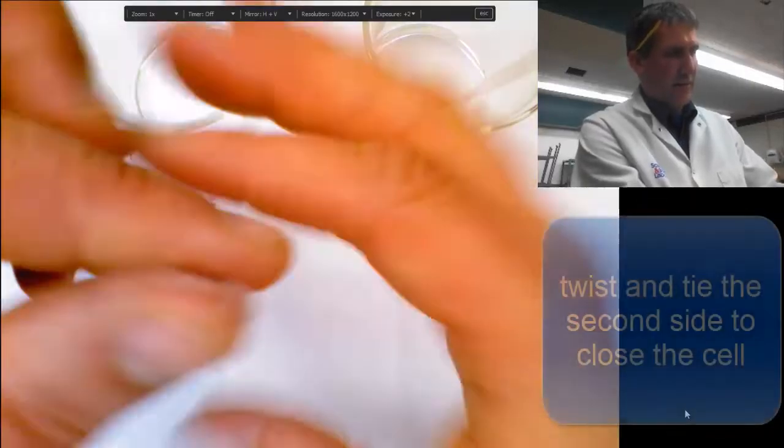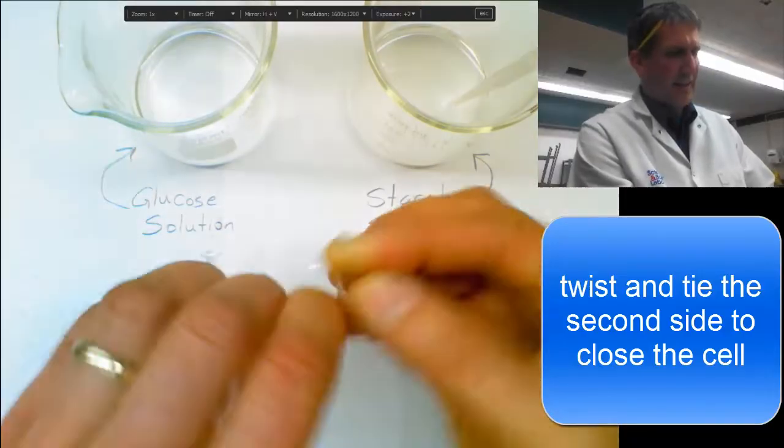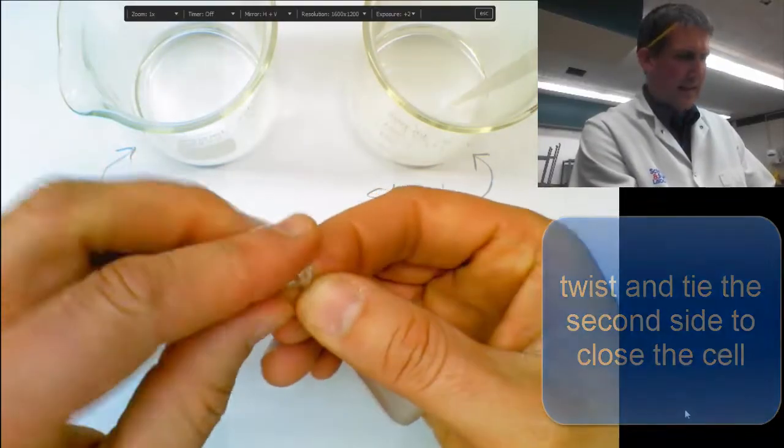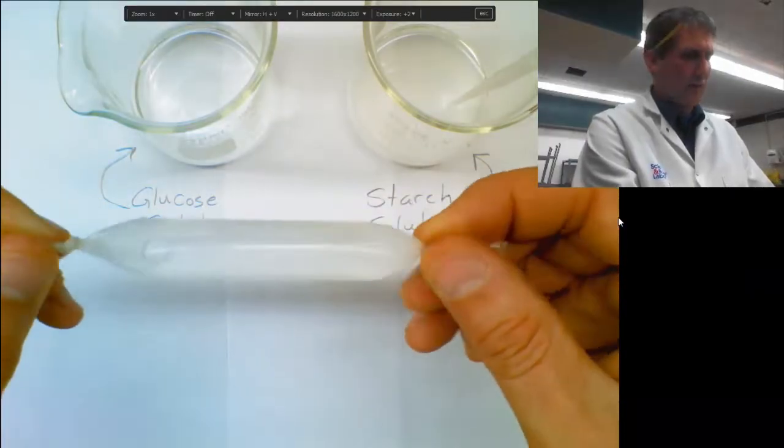So now you want to carefully push all the excess down, twist the cell and then tie off the end. And there you have your nice cell.